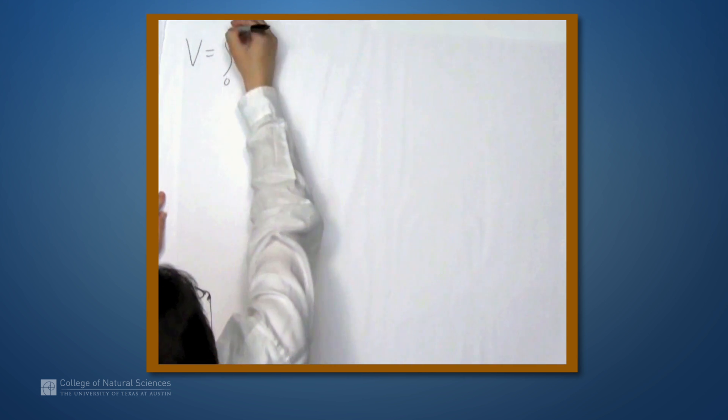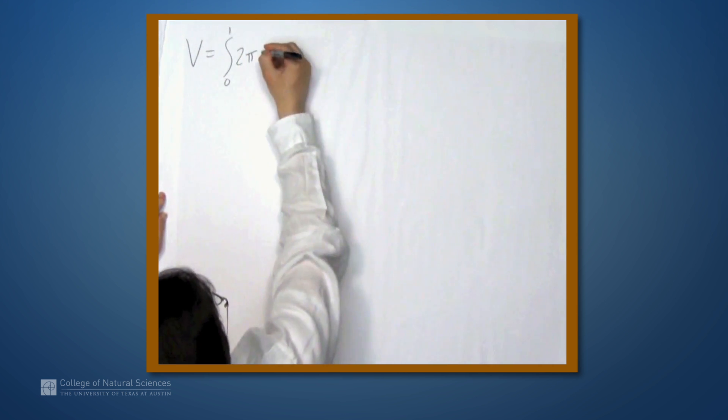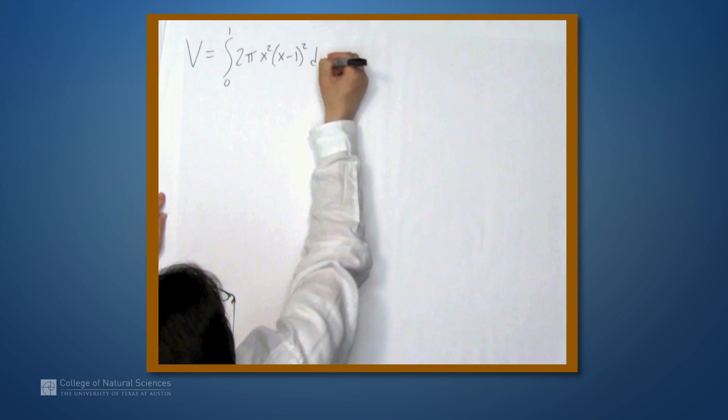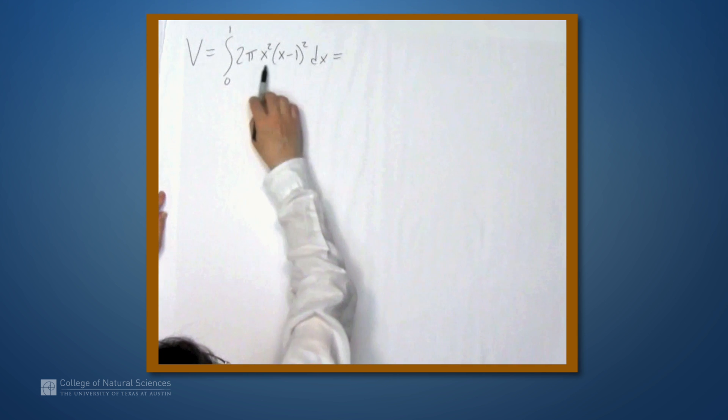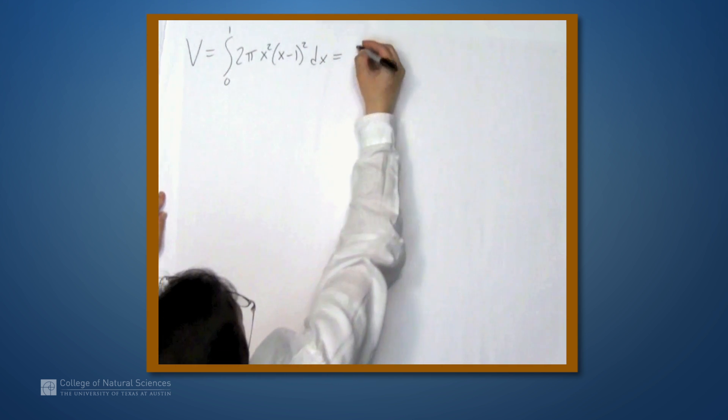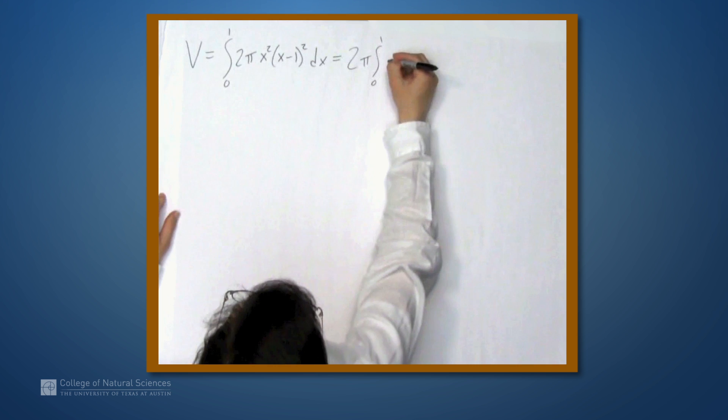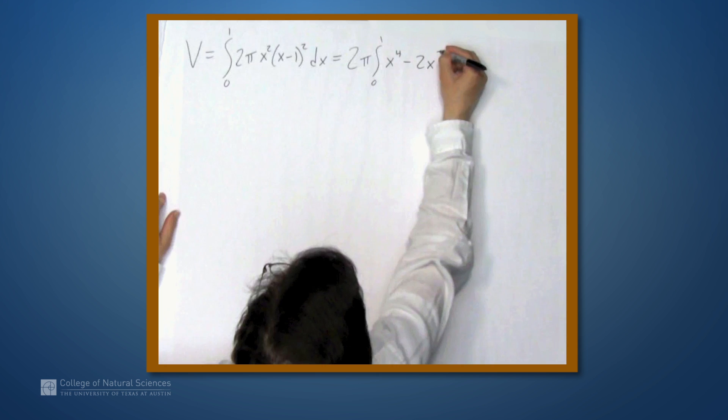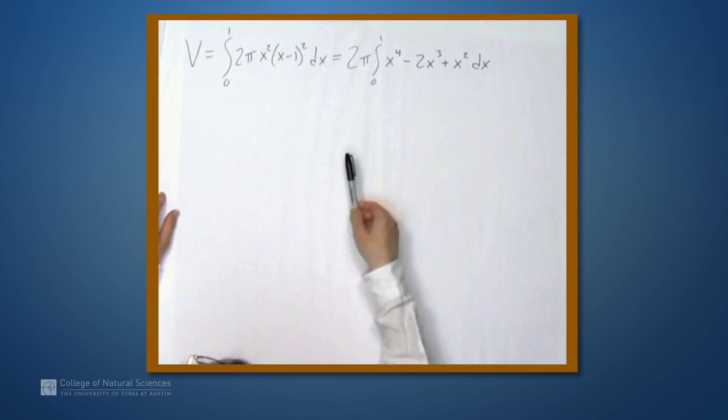The volume, let's write down the integral again, is the integral from 0 to 1 of 2π. We had x times x, so I'll just make that an x squared, times (x minus 1) squared dx. So, the first thing, let's distribute this polynomial, and in fact, pull out the 2π. So, we'll get 2π times the integral from 0 to 1 of x to the fourth minus 2x cubed plus x squared dx. This is the polynomial you get when you distribute this polynomial inside here.